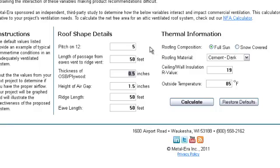The thickness of our OSB or plywood is going to be half an inch, and our air gap will be one inch. That's the air gap of our vented nail base. Our ridge length and our eve length will each be 50 feet.